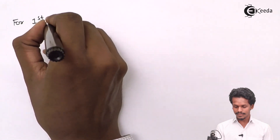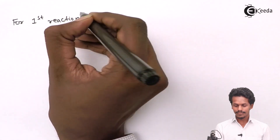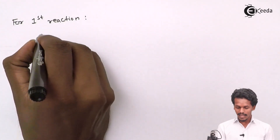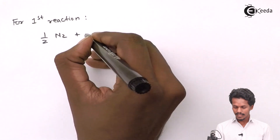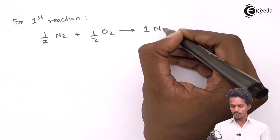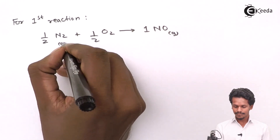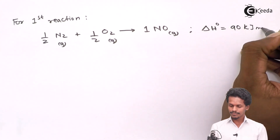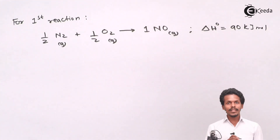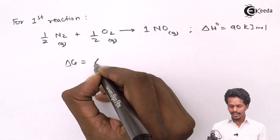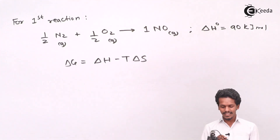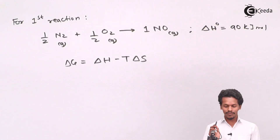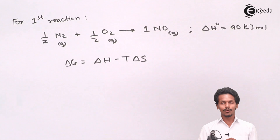Starting with the first reaction: half moles of N₂ plus half moles of O₂ gives one mole of NO(g), with ΔH = +90 kJ/mol. To predict whether the reaction is spontaneous, we use the formula ΔG = ΔH − TΔS. However, only the ΔH value is given, and there is no information about temperature or the change in entropy.